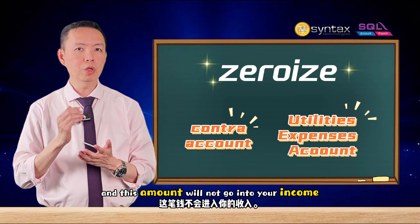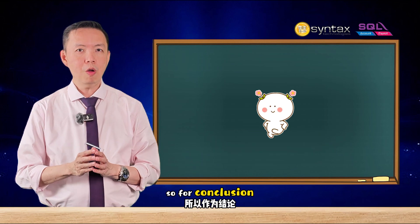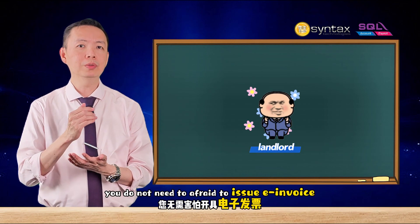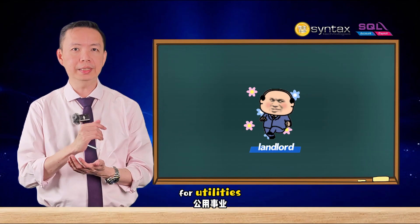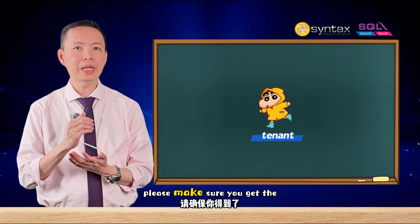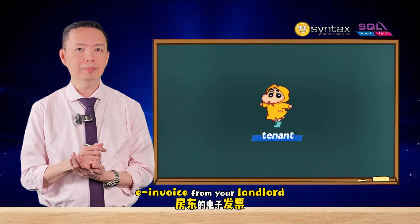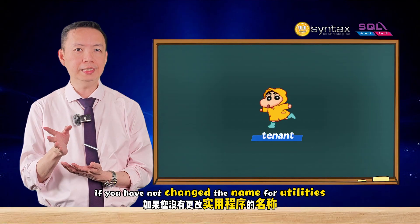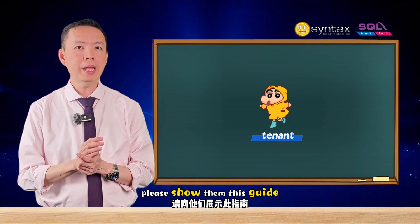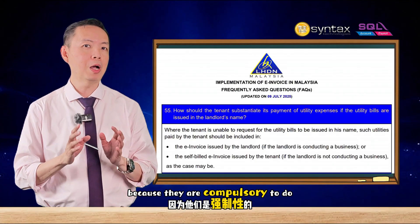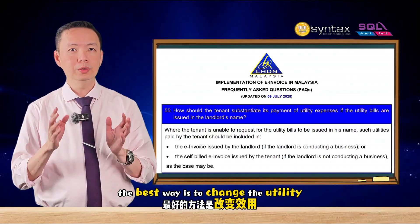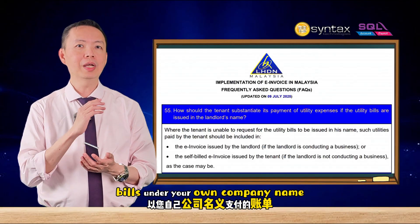So in conclusion, as a landlord you do not need to be afraid to issue an e-invoice for utilities because this will not be counted as your income. For tenants, please make sure you get the e-invoice from your landlord. If you have not changed the name for utilities, or if your landlord does not want to do so, please show them this guidance because they are compulsory to do so. Still, the best way is to change the utilities bills under your own company name.